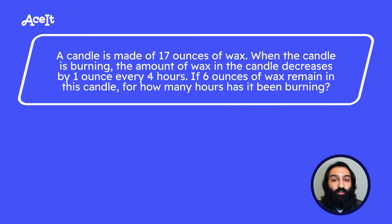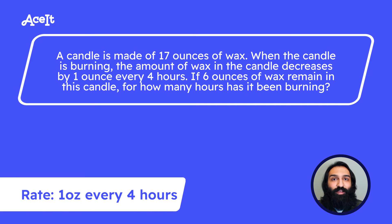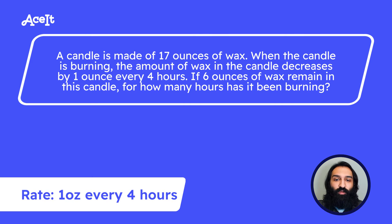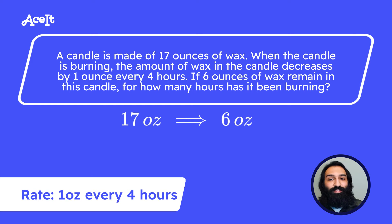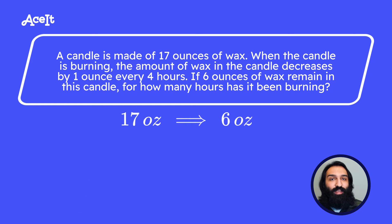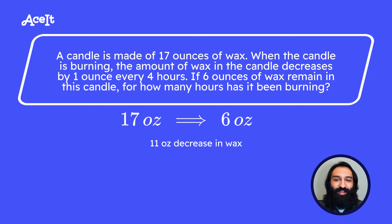Can you identify the rate in this problem? It's 1 ounce every 4 hours. We're trying to figure out how many hours it's been burning. We know that the candle started at 17 ounces and ended at 6 ounces — that's an 11-ounce decrease in wax.